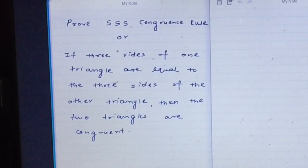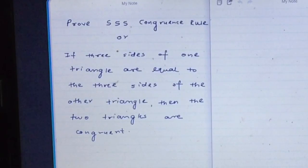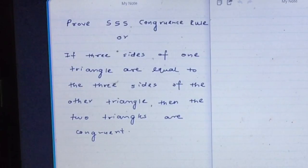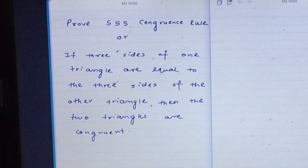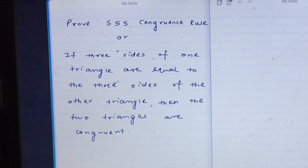Hi friends. Here we are proving the side-side-side congruence rule. The rule states that if the three sides of one triangle are equal to the three sides of the other triangle, then the two triangles will be congruent.